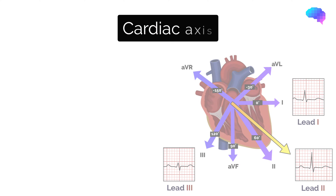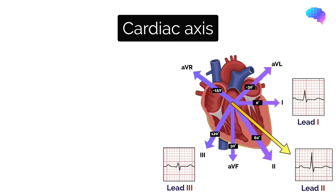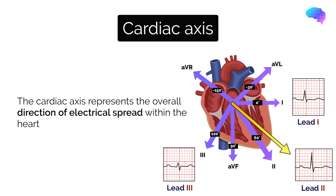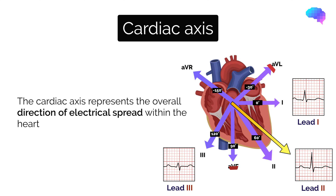Let's look now at the cardiac axis. The cardiac axis represents the overall direction of electrical activity as it spreads through the cardiac conduction system. In healthy individuals, you would expect the cardiac axis to lie between minus 30 degrees and plus 90 degrees.